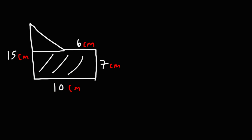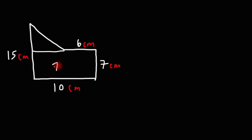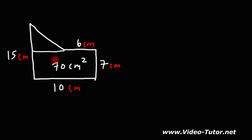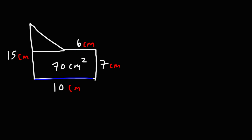For the rectangle, the area is going to be length times width: 10 times 7, so that's 70 square centimeters. Now let's focus on the triangle. What is the length of the base of the triangle? Notice that it's the difference of these two numbers. If we subtract 10 by 6, we get the amount left over, which is 4. So this is 4 units long.